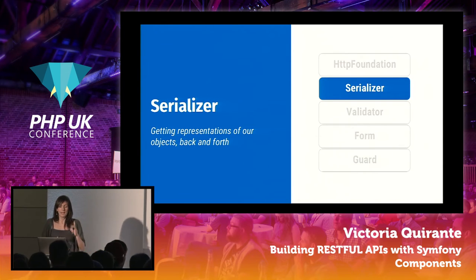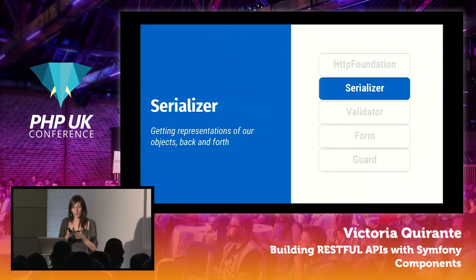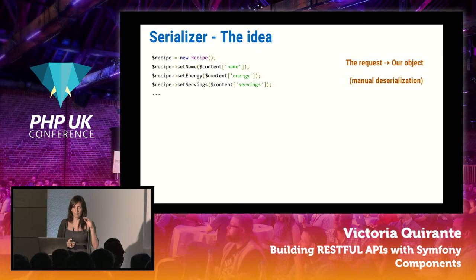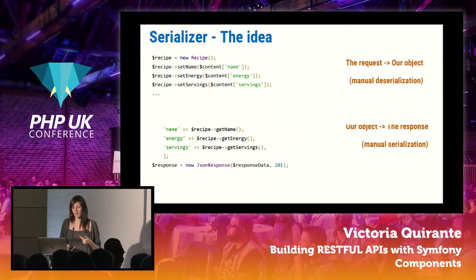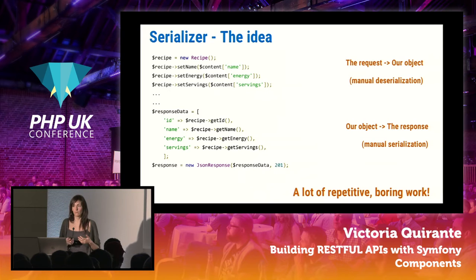Next component: Serializer. The Serializer is going to be one of our best friends because it helps us create the exact representations we want in our API. Without it, to update an object from a request we'd have to manually set each property, and in the opposite direction build the response property by property — tedious and repetitive, especially if you have 50 properties. The Serializer handles this for us.